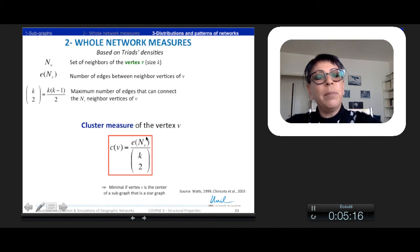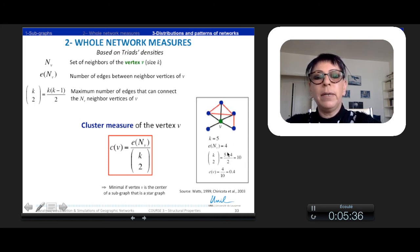And it is minimal if the vertex V is the center of a star, for example. Here, for example, at right, we have a network with five nodes. And there are four different linkages between the neighbors of V. So the whole possibilities of linkages between the neighbors of V would be 10. So the cluster index or measure of the vertex is 0.4.